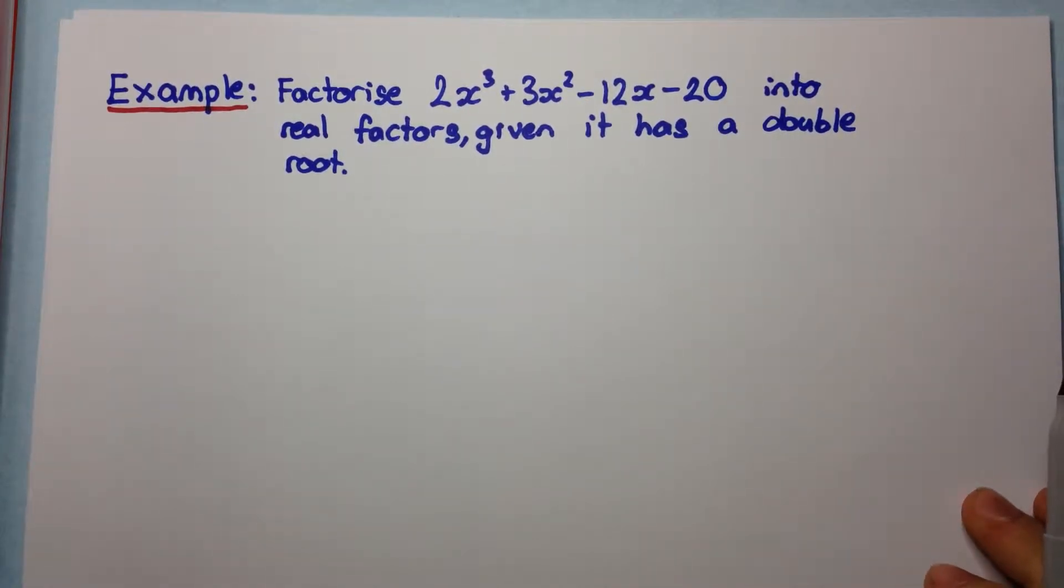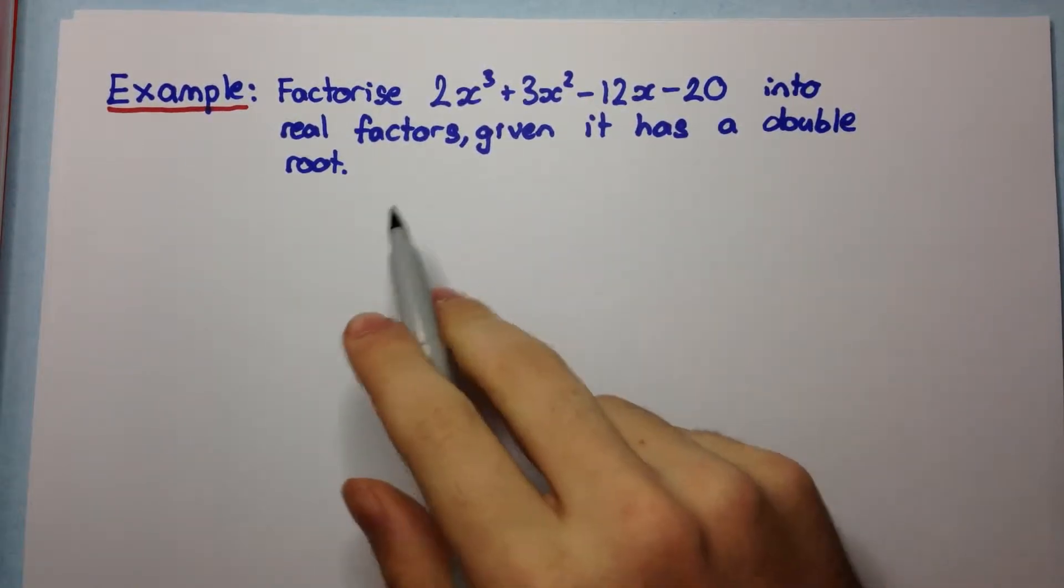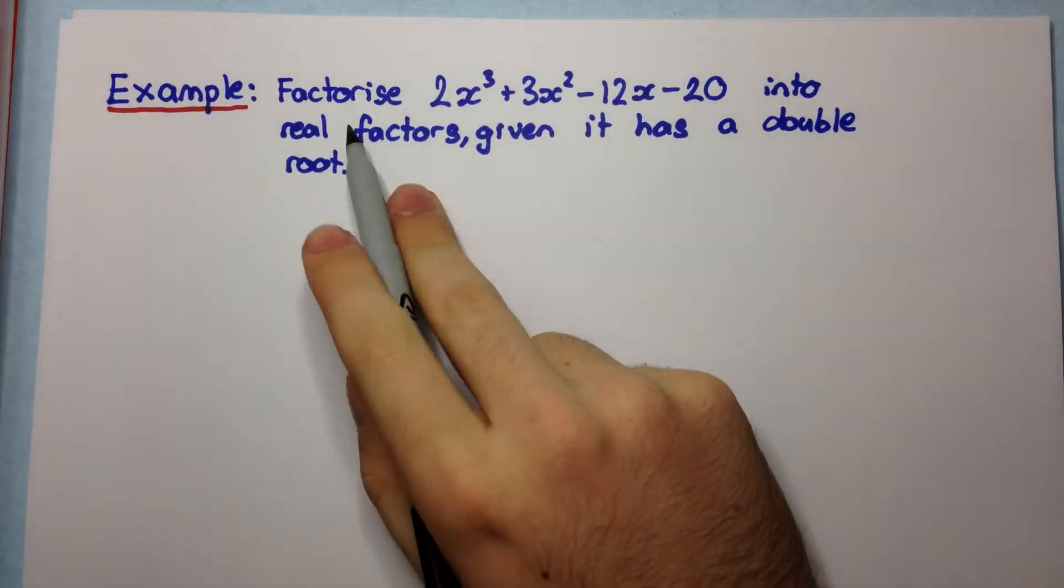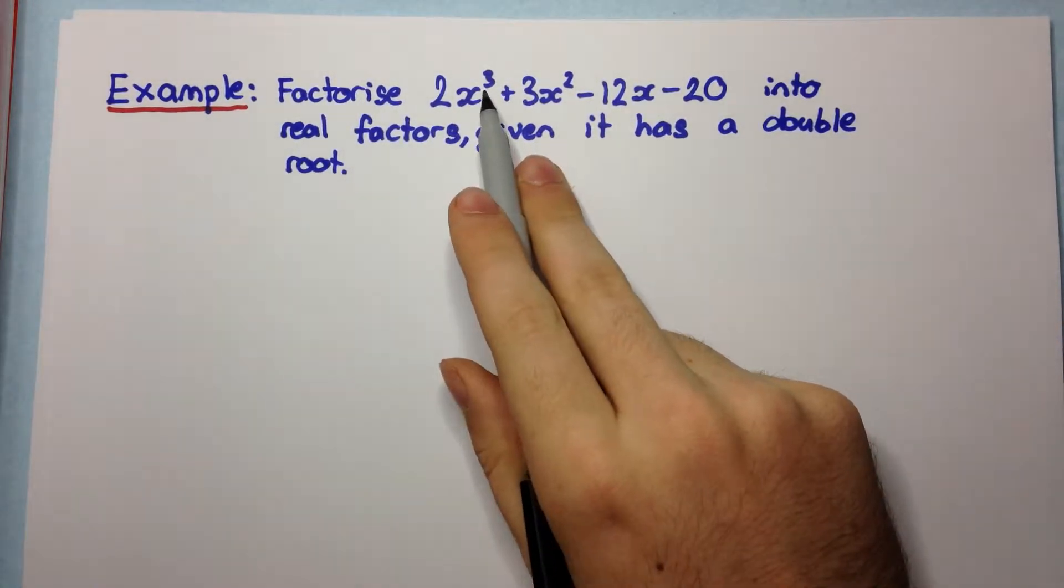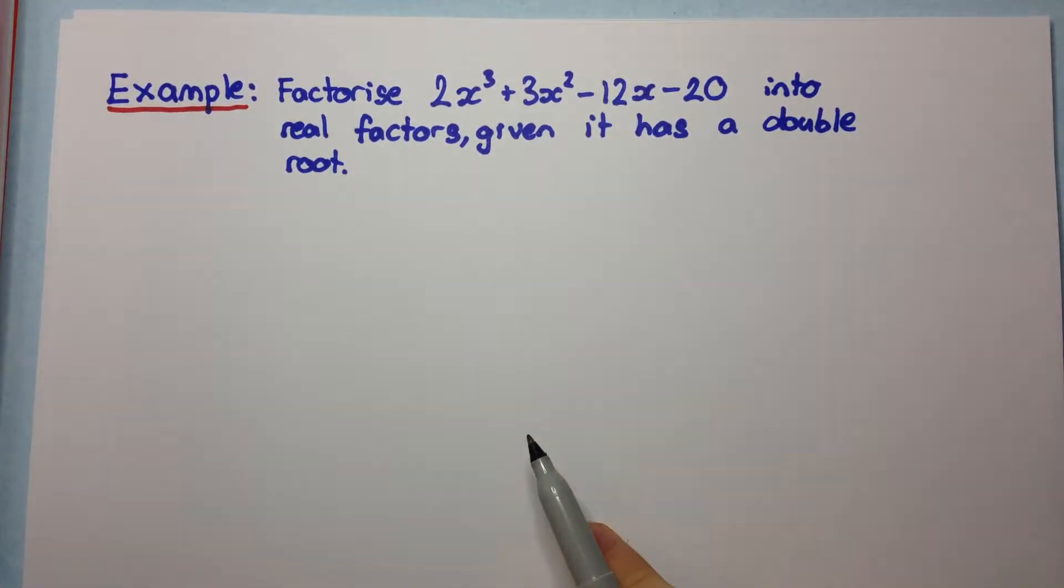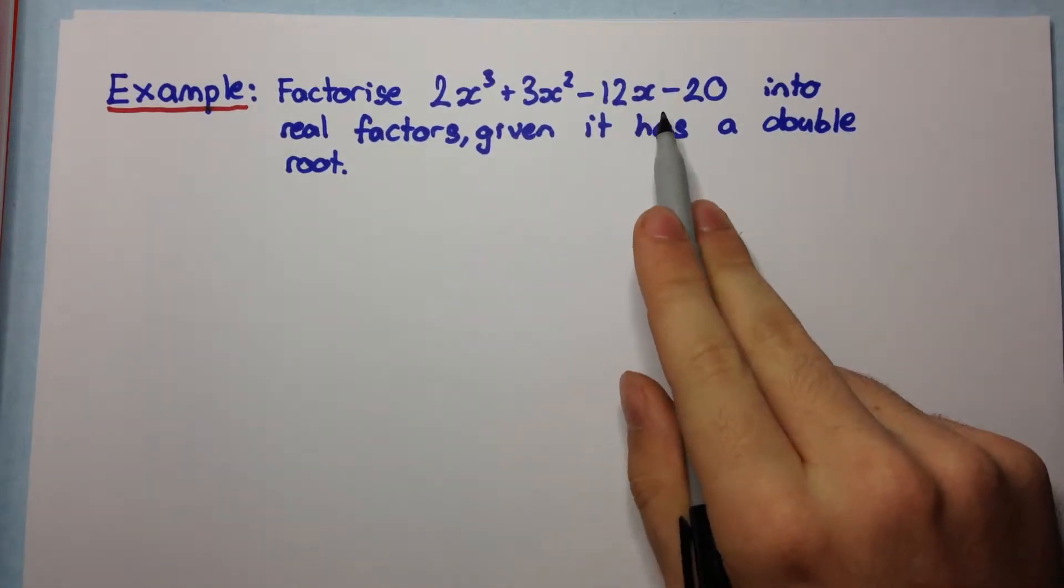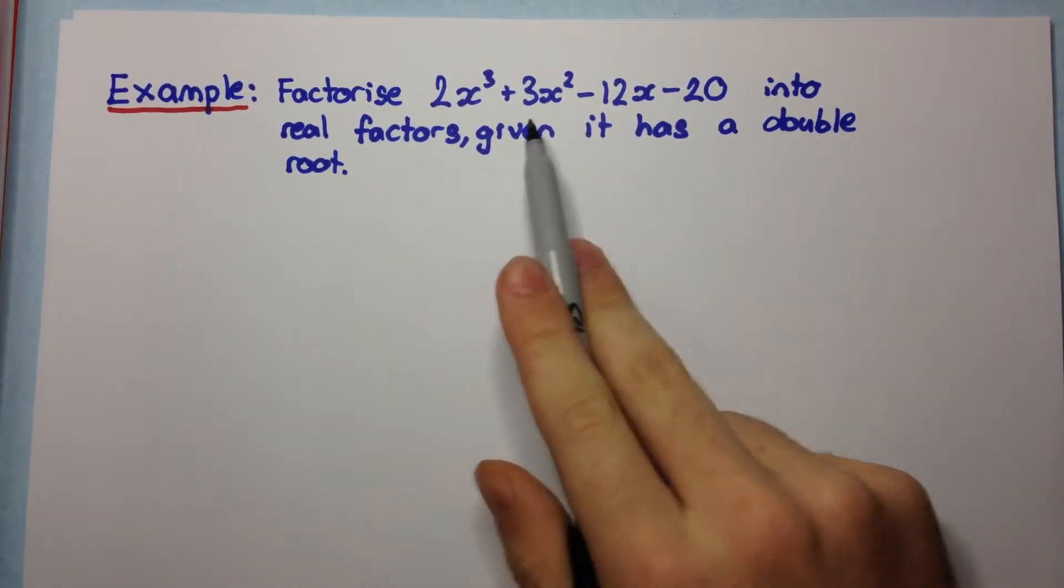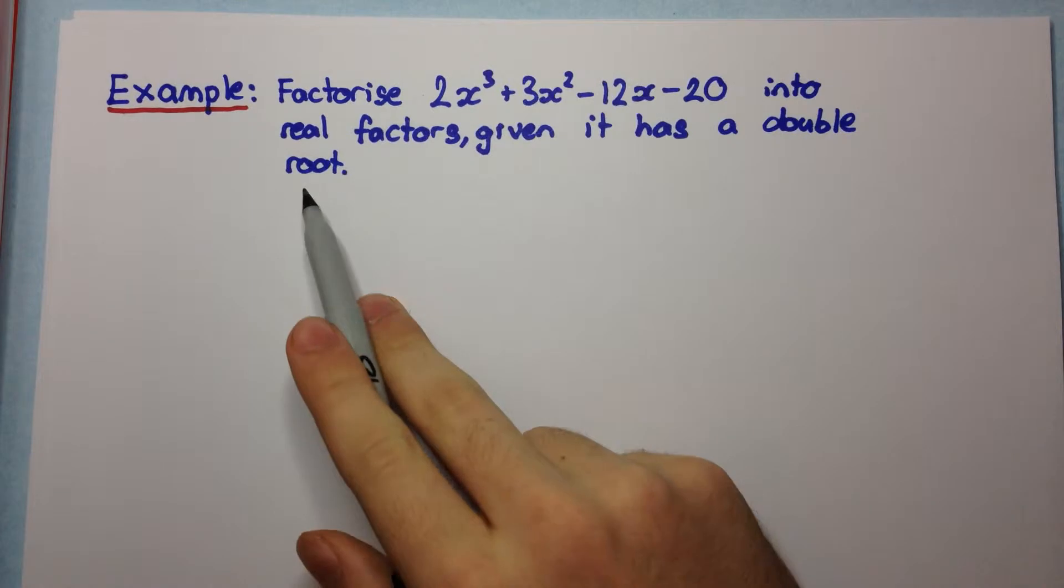Okay, so in today's example we're going to see how to apply the multiple root theorem to solve a question. The question says, factorize 2x³ + 3x² - 12x - 20 into real factors given it has a double root.